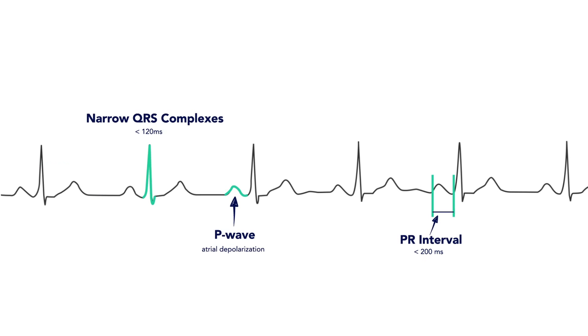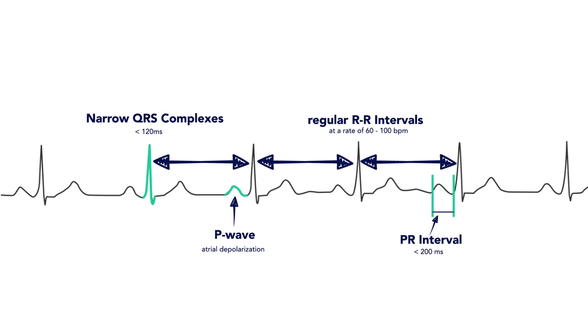Subsequently, depolarization through the ventricles is fast, leading to narrow QRS complexes occurring at a rate between 60 to 100 beats per minute.